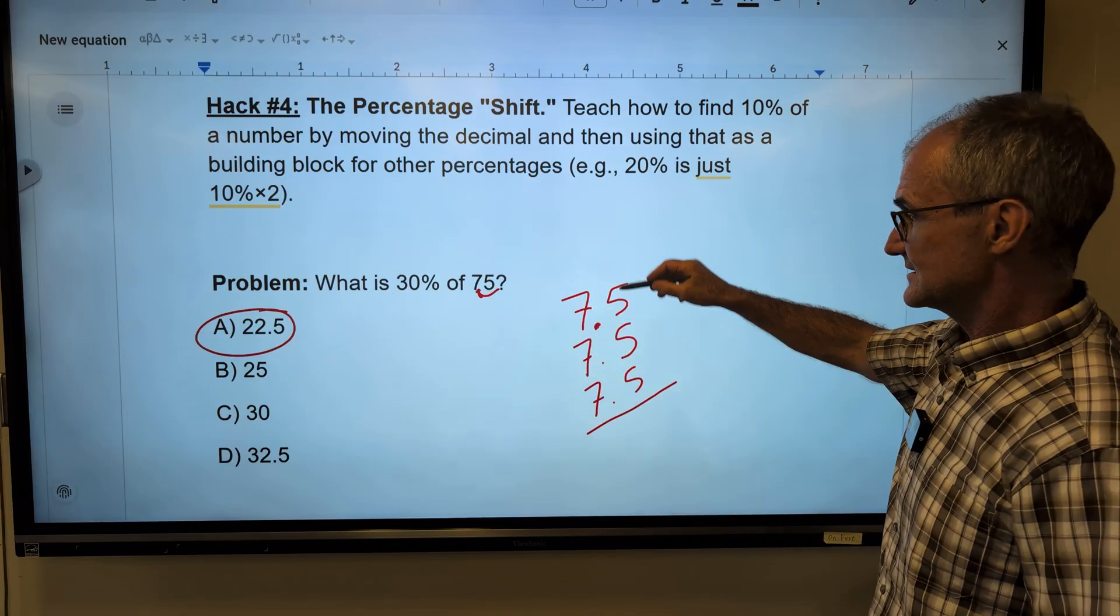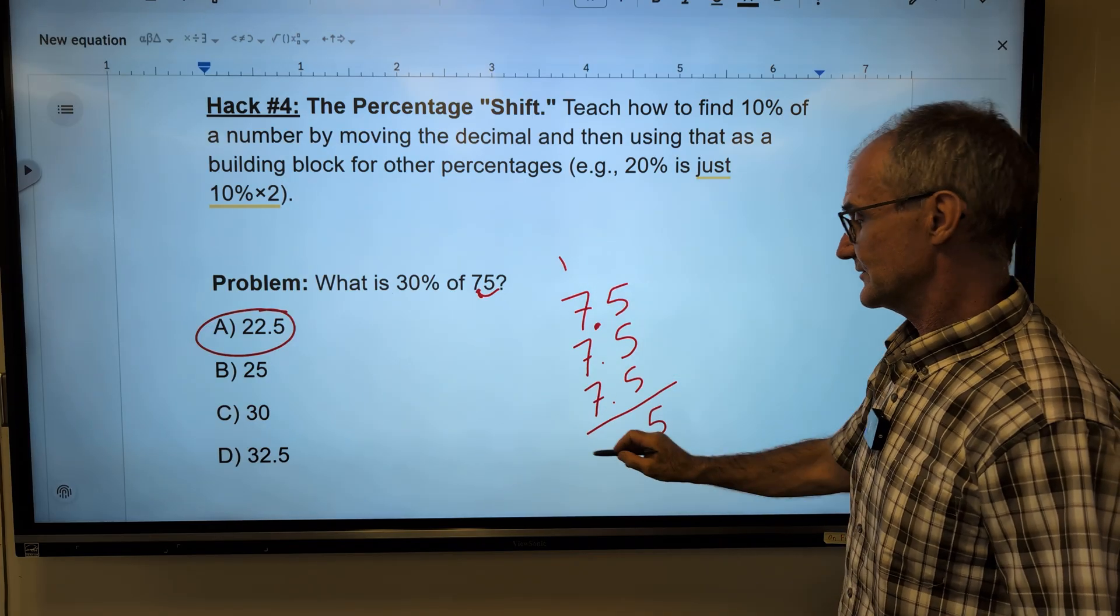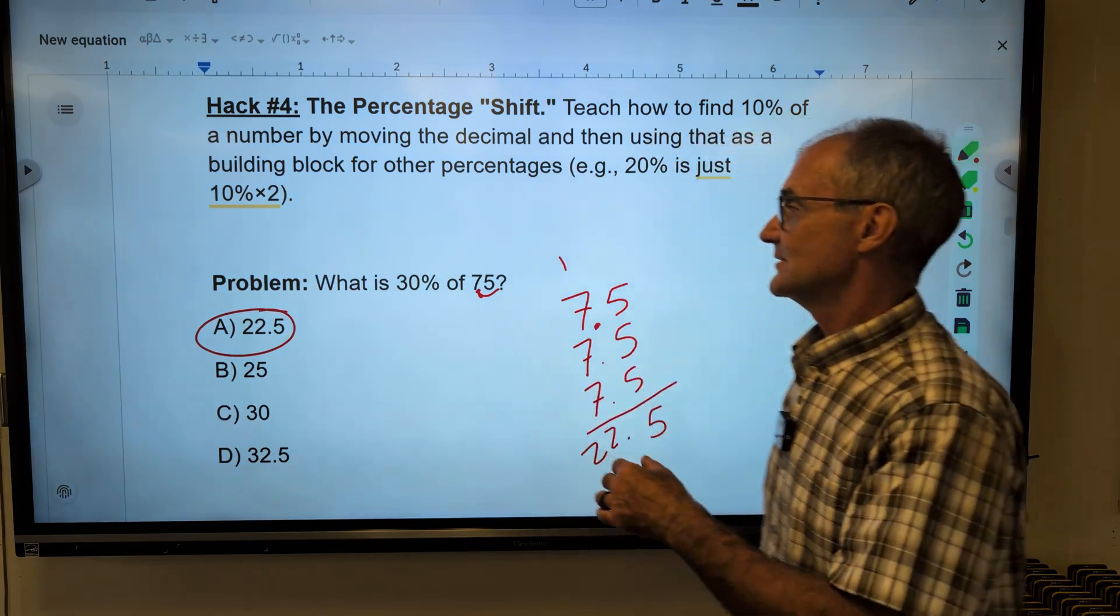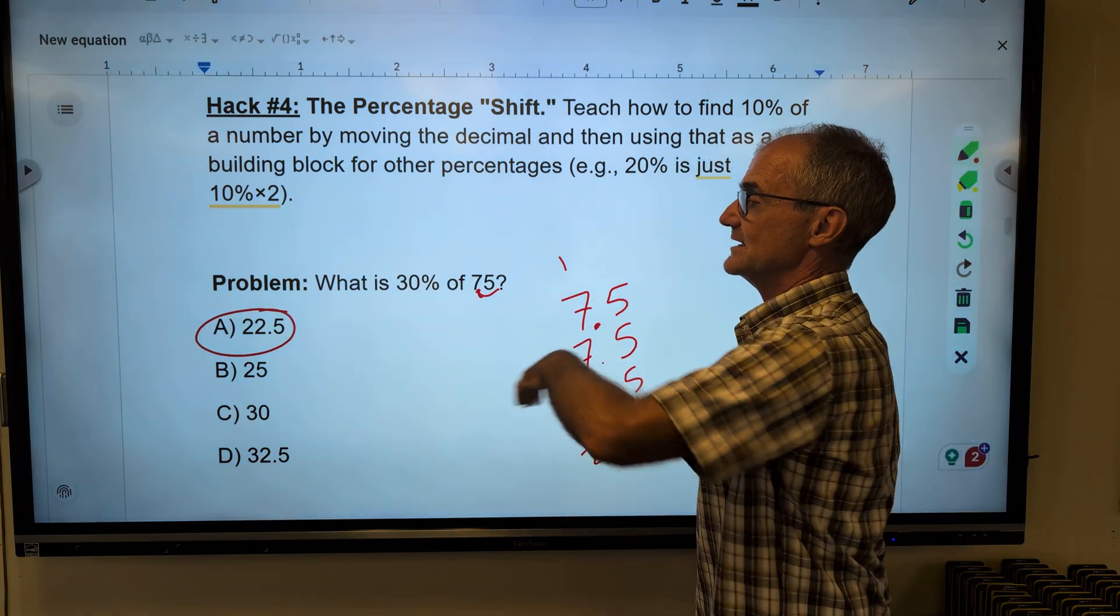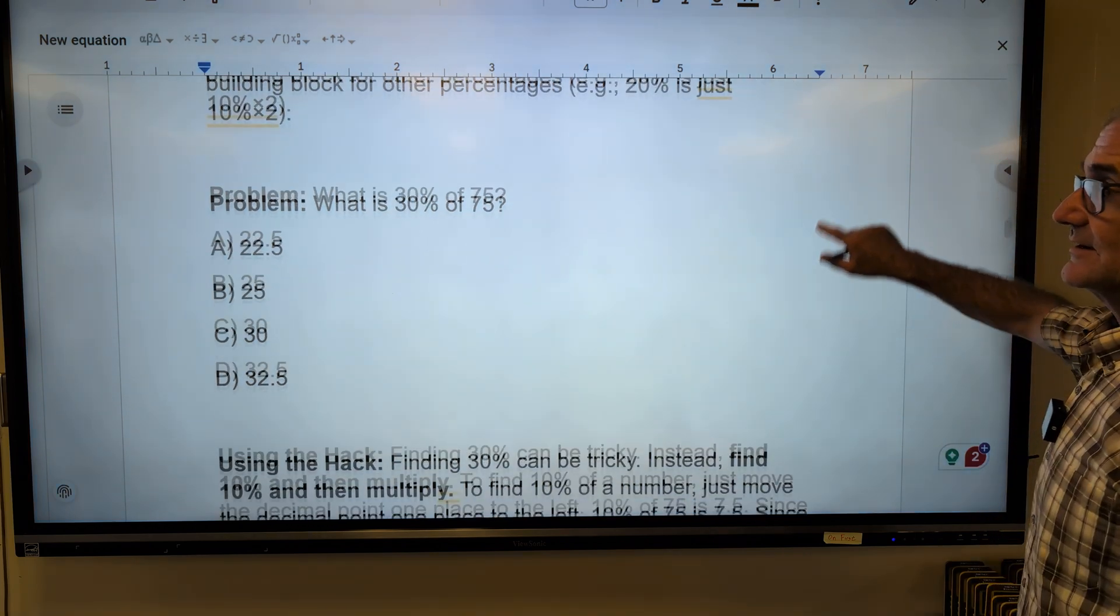First off, I can see these add up to 15, carry the 1, 21 plus 1, 22.5. So rather than multiply it all out, know that 30% is made up of three ten percents.